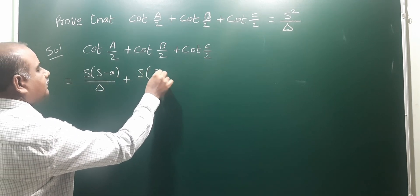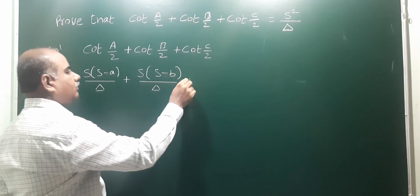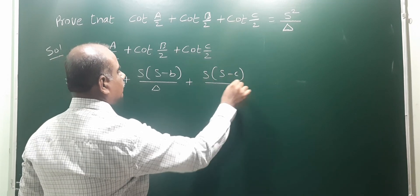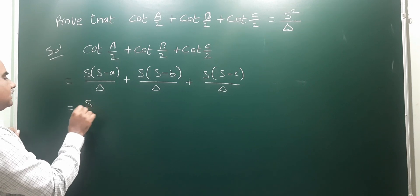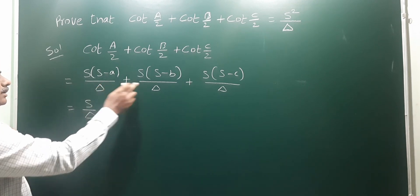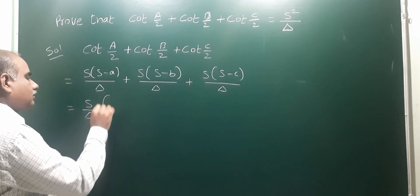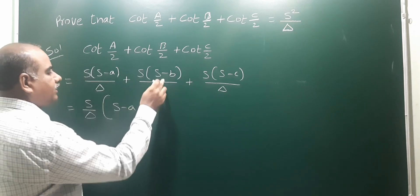So take s/Δ as common. Taking s/Δ common from each term, the remaining terms are (s-a), (s-b), and (s-c). That equals s/Δ times [(s-a) + (s-b) + (s-c)].